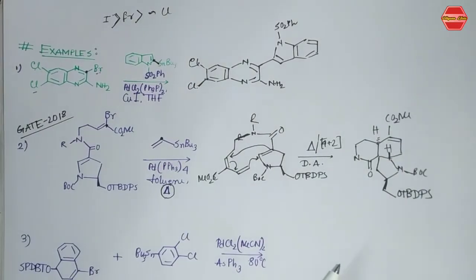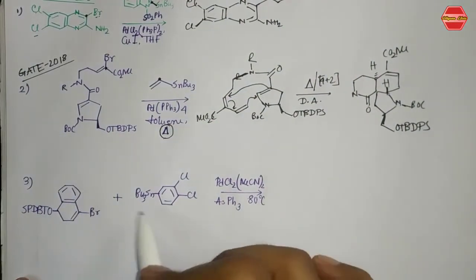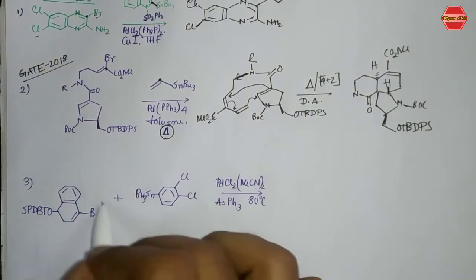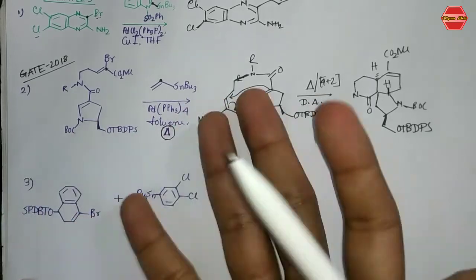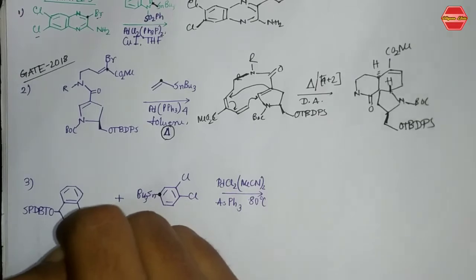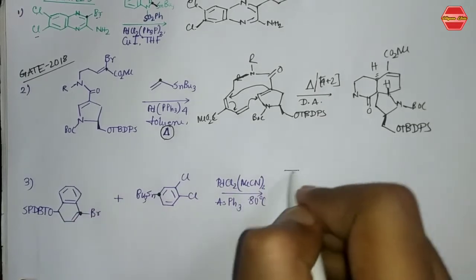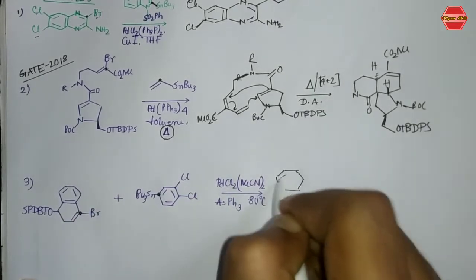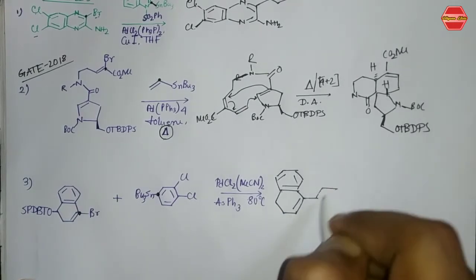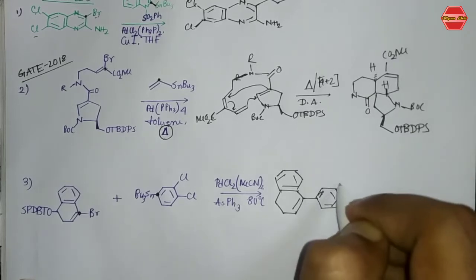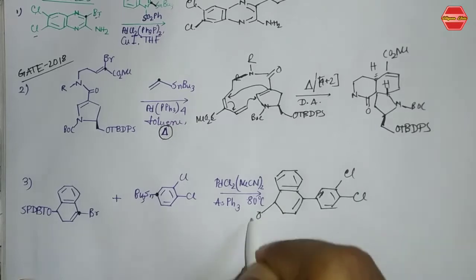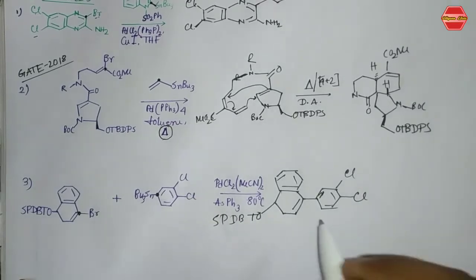The third example is quite simple: you are given an organohalide and an organostannane. The indicated positions form a bond through the Stille cross-coupling reaction, and the final product contains the OTBDPS group. This is all about the product from this reaction.